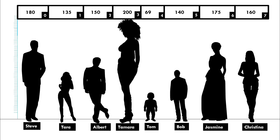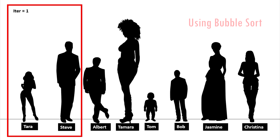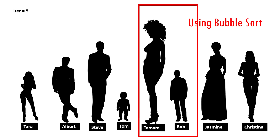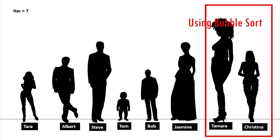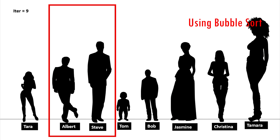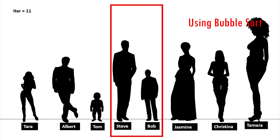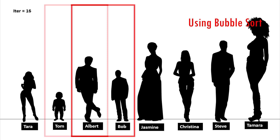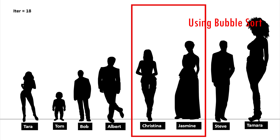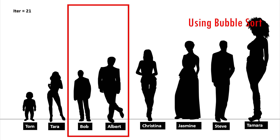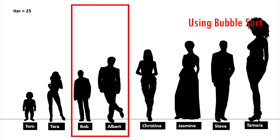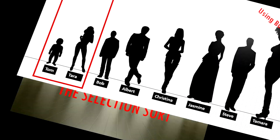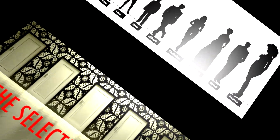We could use bubble sort to bubble up the tallest person towards the end. But Tamara, and in fact everyone else, wouldn't appreciate the number of position swaps that they would be required to do. Let's use selection sort instead.